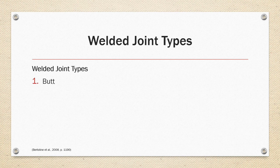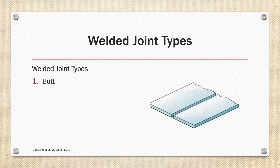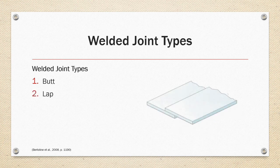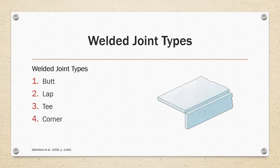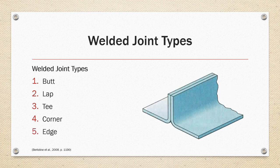Weld joint types — there are five general types. The first is the butt joint, where two pieces are butted up against each other. There's a lap joint where the material is overlapping. There's a T-joint where the material runs perpendicular to each other. There's a corner joint where the two pieces come to a corner. And there's an edge joint where flanges are bent and the weld is performed on the edge of the flange.